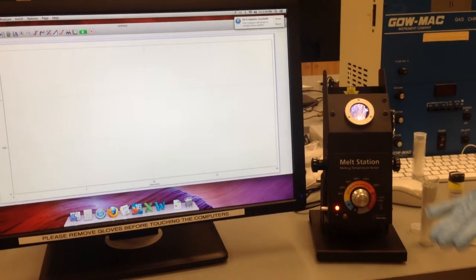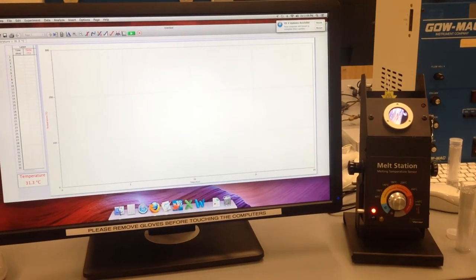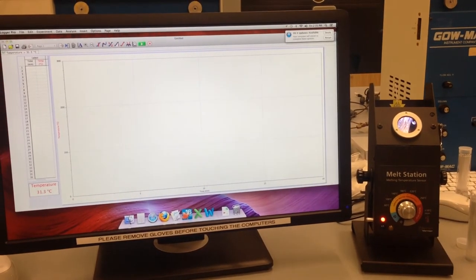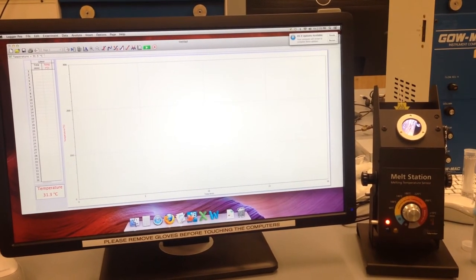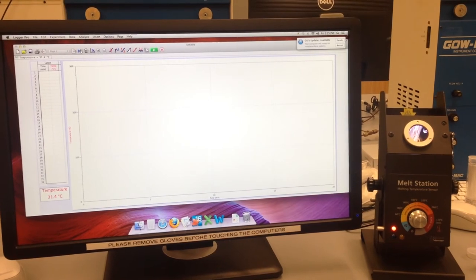Adjust the dial so that it raises the temperature 7 to 10 degrees Celsius per minute. If you know the approximate melting temperature of your substance, you should decrease the rate of the increasing temperature to 1 to 2 degrees per minute once you reach a threshold area. If you don't know the expected temperature range, take a crude melting point and then repeat the experiment.